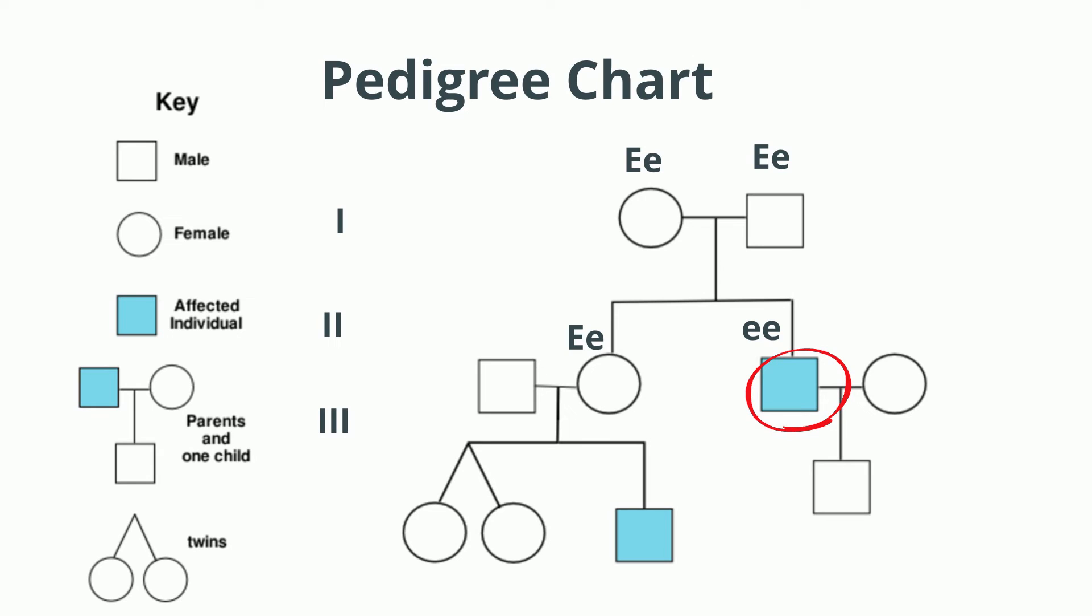Now, let's take a look at his partner and what would she need to be. Well, since their offspring does not have the trait or disease, that would mean that since it's recessive, their offspring would have to have at least one dominant allele.